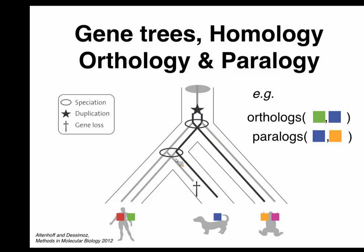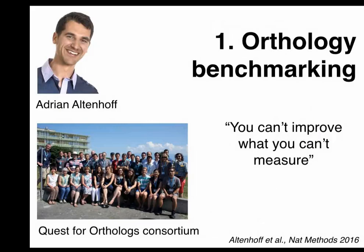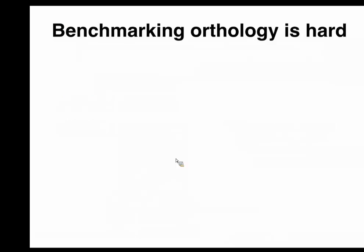That brings me to the first part of the talk: orthology benchmarking. This is work done with Adrian Altenhoff and the Quest for Orthologs Consortium. The motto of this work is: you can't improve what you can't measure. It turns out that measuring orthology quality is quite hard — surprisingly hard for something so fundamental. The main conceptual reason is that you're trying to infer events that happened maybe hundreds of millions of years ago, with very limited information.